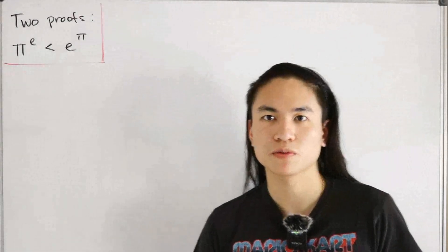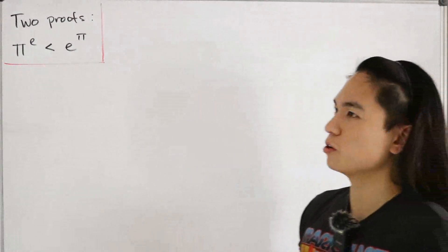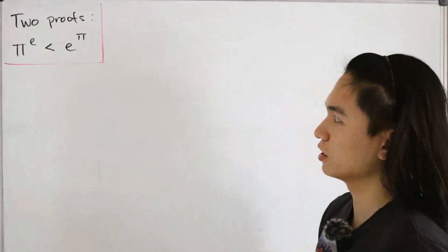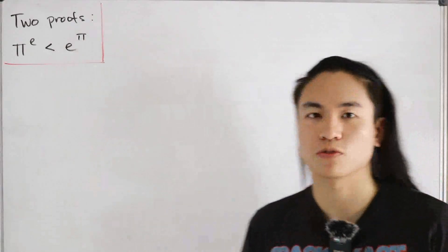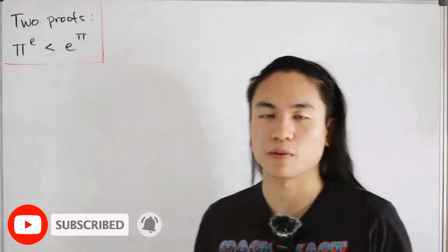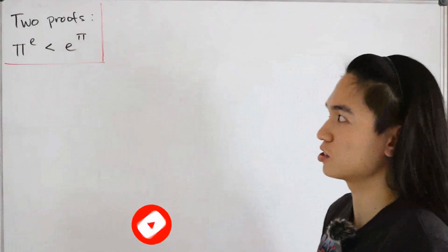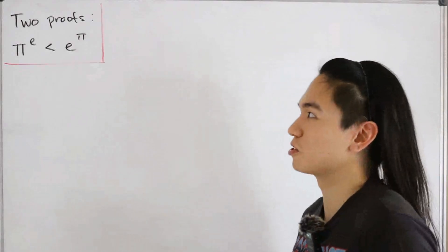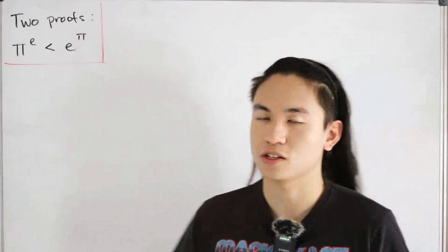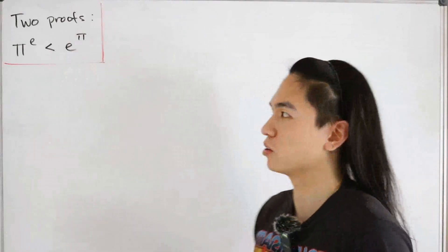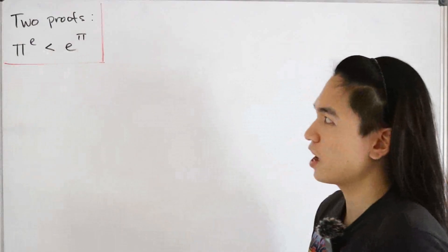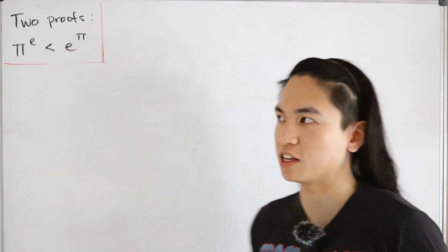We're going to prove that π^e is strictly less than e^π. Obviously we could plug this into a calculator, but suppose we're not given that advantage. We're going to go over two different proofs: one is the most standardized proof you'll find if you look it up, and the second is a more interesting take from the visual perspective.